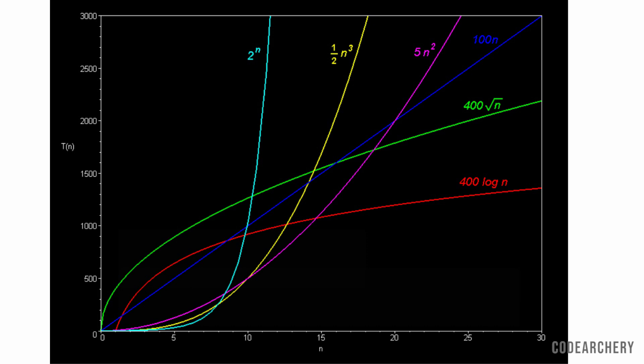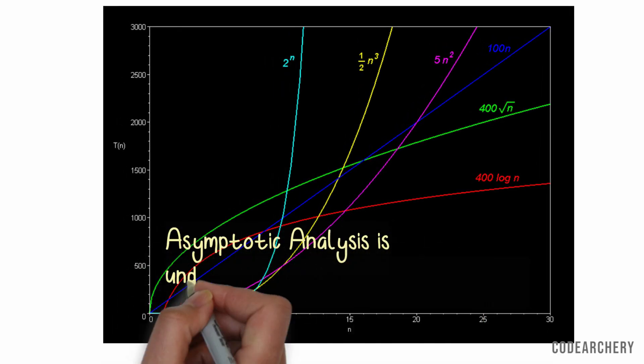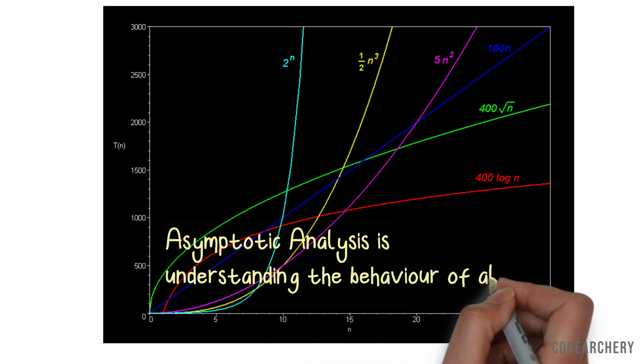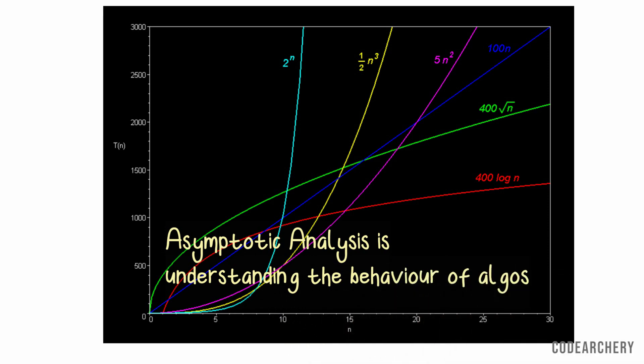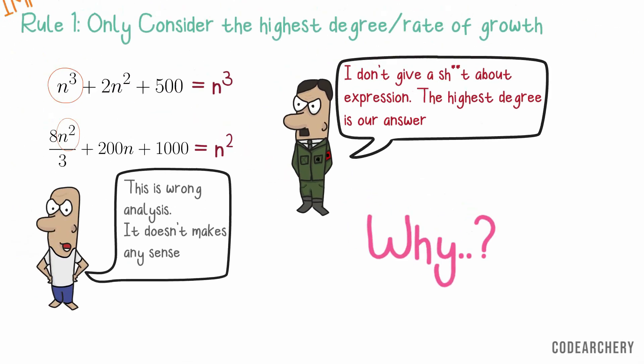So, these are, we can say, the categories of algorithms. Logarithmic algorithms are the best performing. So, now you understand why do we focus on the higher degree or driving factor in an expression. So, this is the real definition of asymptotic analysis. Asymptotic analysis is understanding the behavior of algorithms. I hope that we are now clear with rule 1.